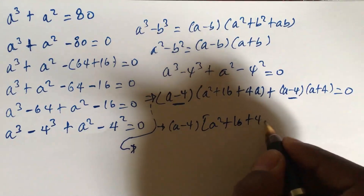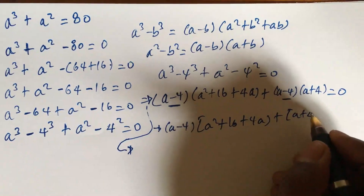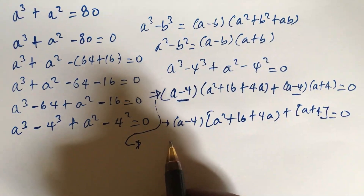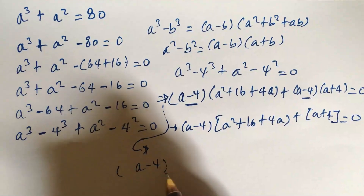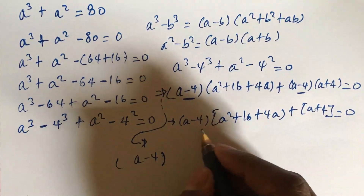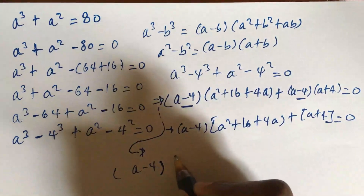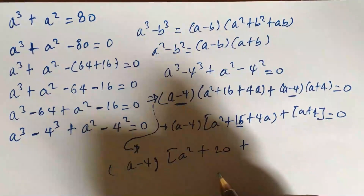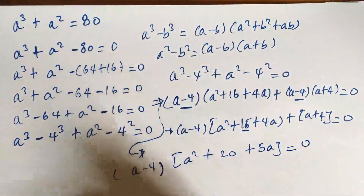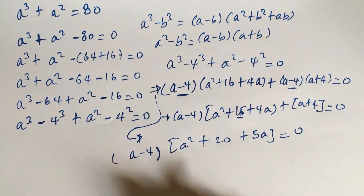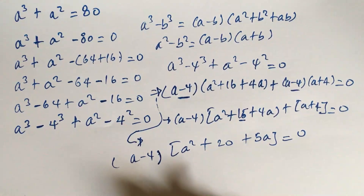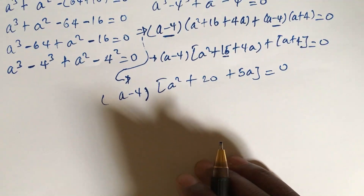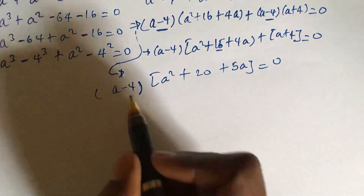So we get (a - 4) times (a² + 16 + 4a + a + 4) = 0, which simplifies to (a - 4)(a² + 5a + 20) = 0. We now have two cases.